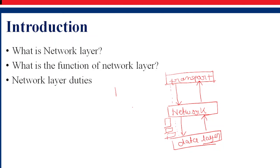The reverse procedure is done when receiving data — when we receive data from the transport layer and encapsulate it. The network layer is also responsible for routing packets from the source host to the destination host. Routes can be based on static tables that are rarely changed, or they can be automatically updated depending upon network conditions.